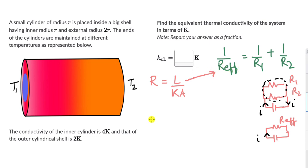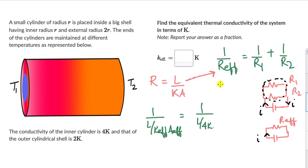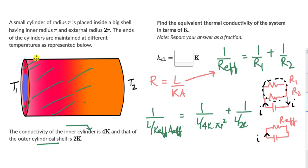To find k_effective, we place the resistance relation into the parallel formula. This becomes: 1 over (L divided by k_effective times A_effective) equals 1 over (L divided by 4K times πR²) plus 1 over (L divided by 2K times the area of the outer shell). The area of the outer shell: we find the total area of radius 3R and subtract the purple cylinder's area, giving π(3R)² minus πR² equals 9πR² minus πR² equals 8πR².